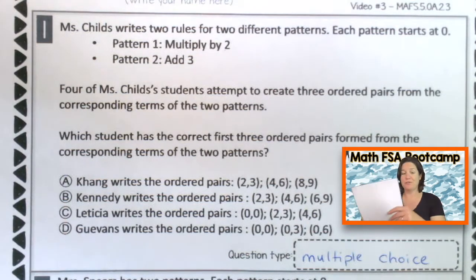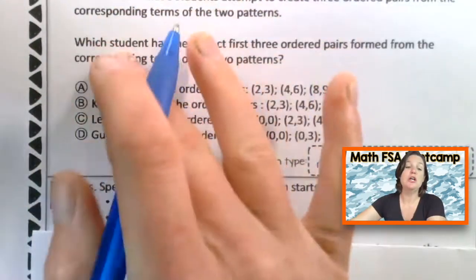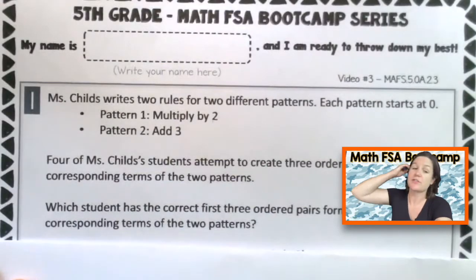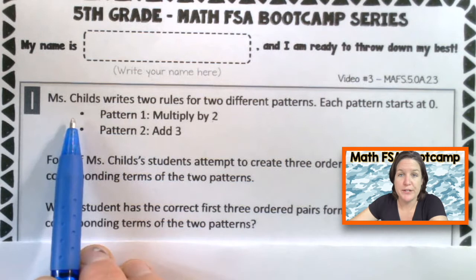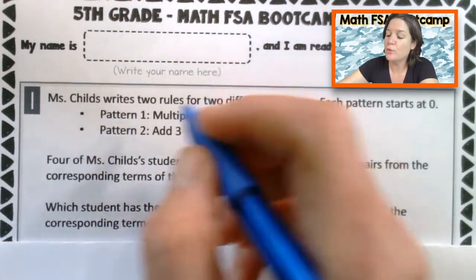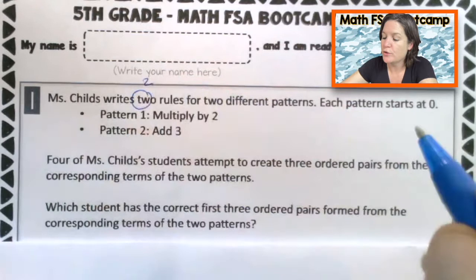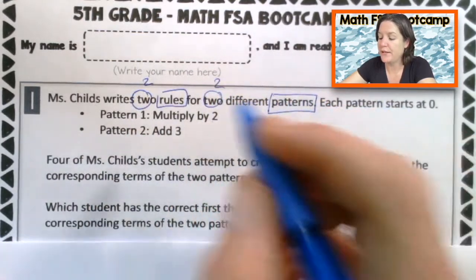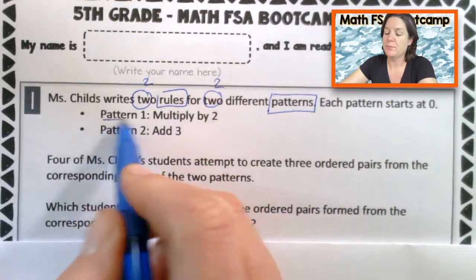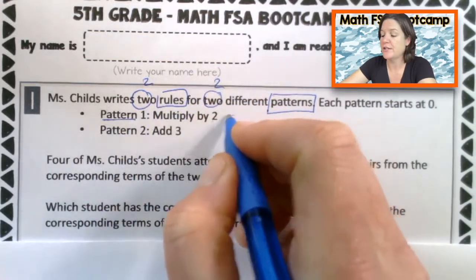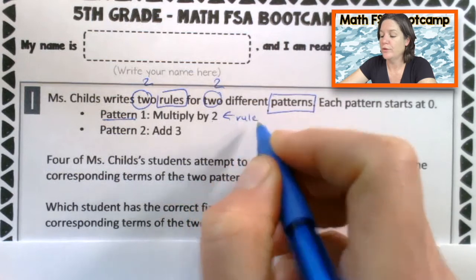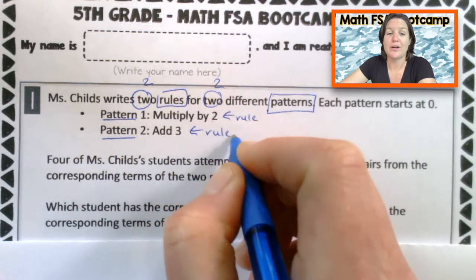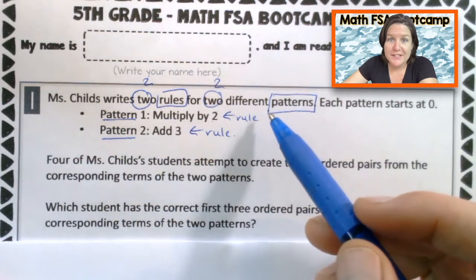So I know for this one, I'm going to need some paper. Notice I didn't even look down here. I'm not even looking at what other people did first. Let me first see what I need to do. Okay. Let's read out one sentence at a time. Ms. Childs writes two rules, two rules or two patterns, two different patterns. So here's the pattern and here's the rule. Here's the pattern and here's the rule. All right. We've got that first one. That first sentence makes sense.